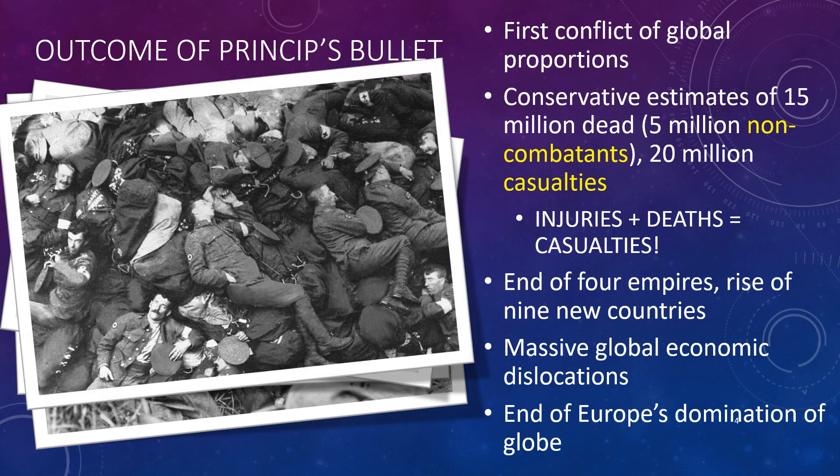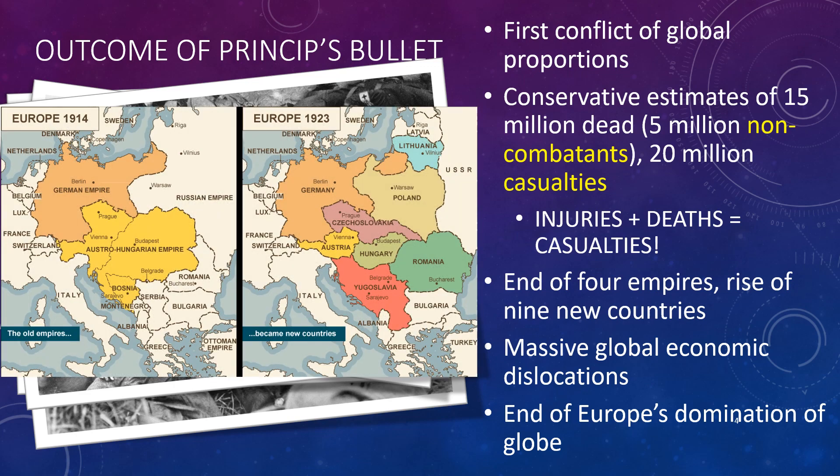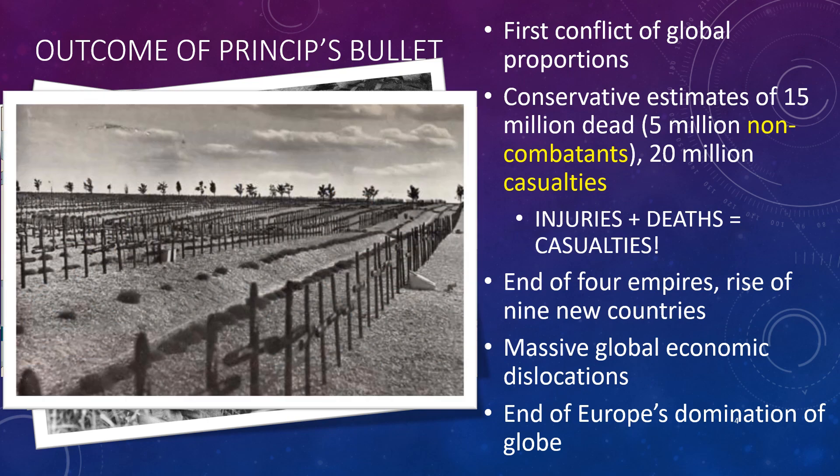It will bring an end to the three nations discussed in 7.1: Tsarist Russia, the Ottoman Empire, and the Qing Dynasty, plus Austria-Hungary. It will also create nine new European nations. Lastly, the economic and, to a large extent, socio-cultural impact of the Great War will start unraveling the hegemony of European colonizers and trigger an era of rebellion and increasing nationalism around the world.